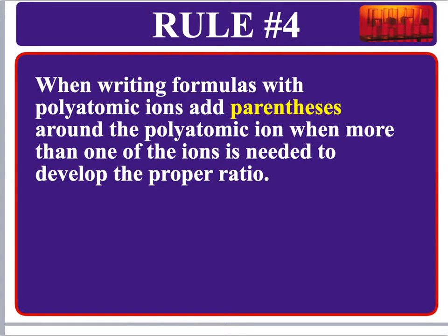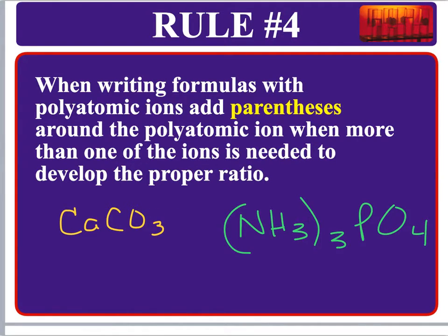One tricky rule: we use parentheses when we have more than one polyatomic ion. For example, calcium carbonate (CaCO₃) has no parentheses — just one calcium and one carbonate ion. But if we need three of a polyatomic ion like hydroxide, we must put parentheses around it and write the subscript outside. Without parentheses, writing the 3 directly would imply 33 hydrogens, which isn't what we want.